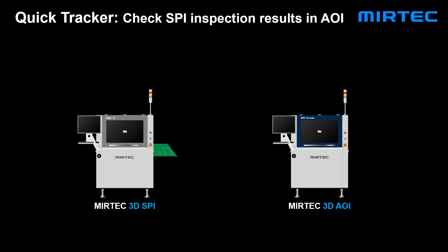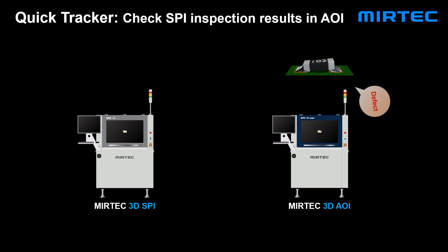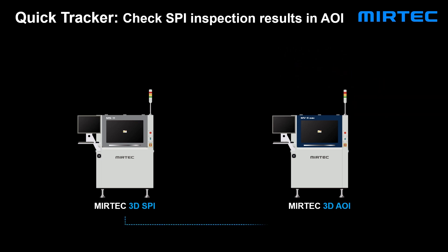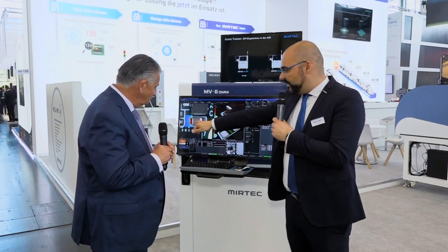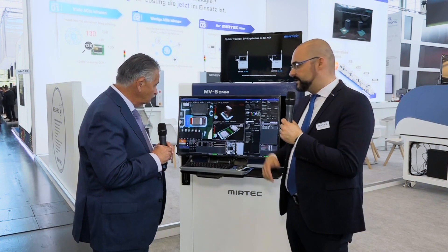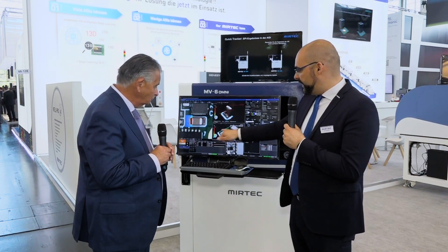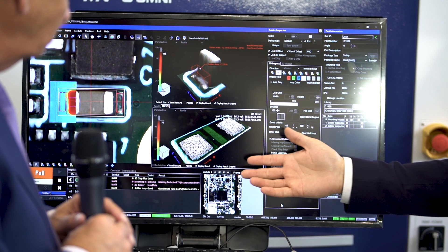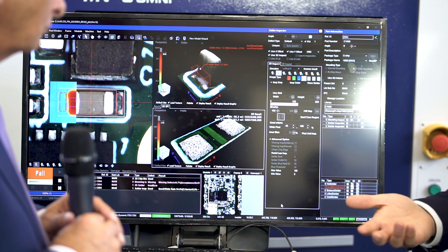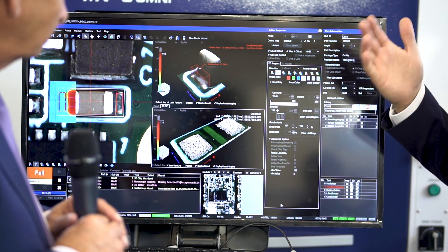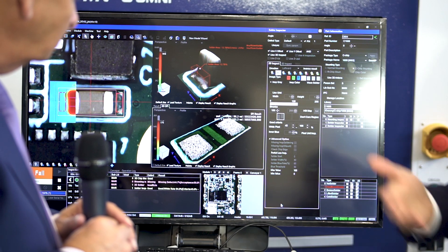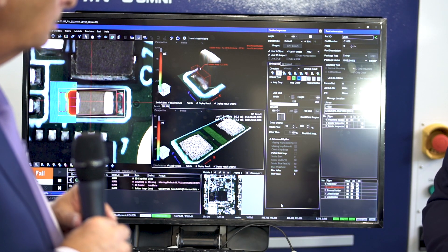Yes, this is the second most asked-for thing that customers approach us with — how do I make it easier for my people? They don't want to walk from their AOI to their SPI all the time just to check the database for why a certain error appears. Here on the AOI, the MV6 Omni has found a problem at the solder joint — an insufficient solder — and at the same time we get at the bottom the results from the SPI to see if it actually came from the printing process. In this case we have insufficient solder, but the pad data looks okay, so you know the issue is not at the printer.